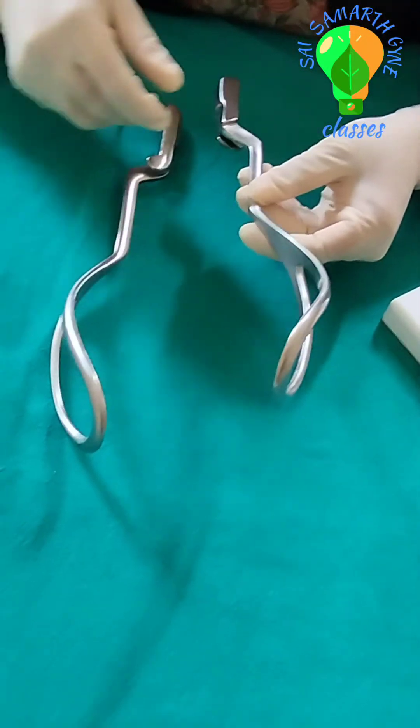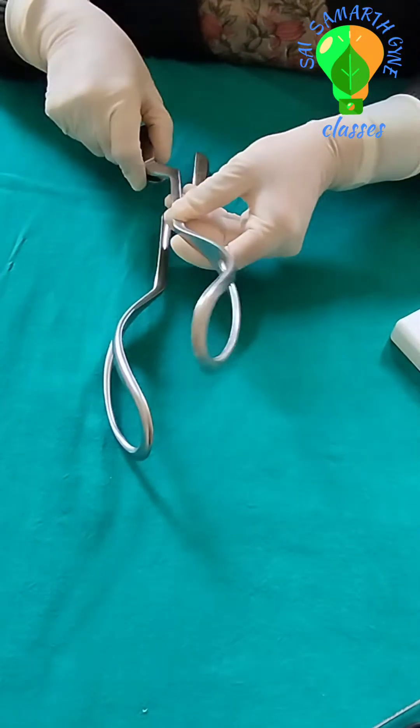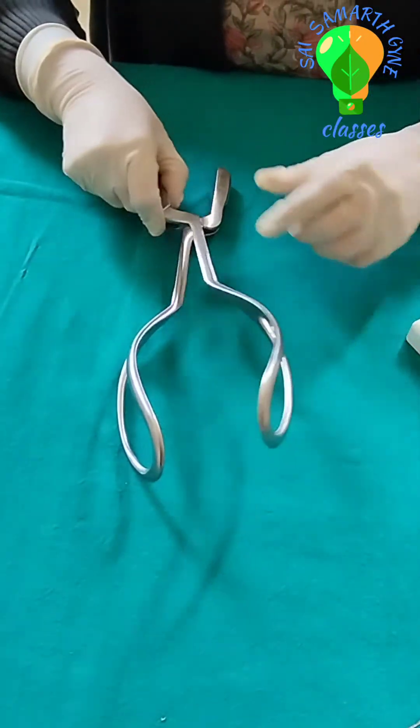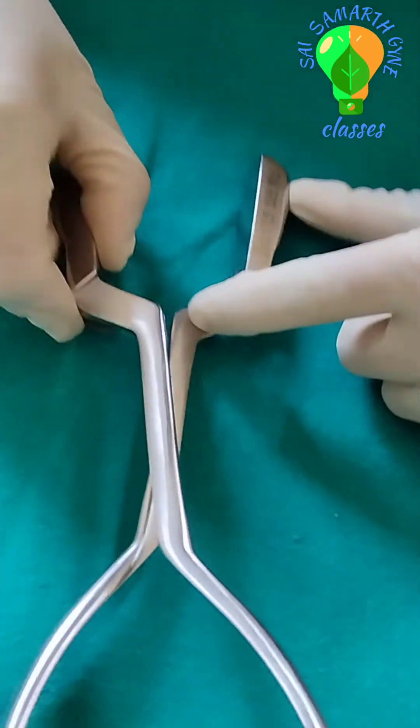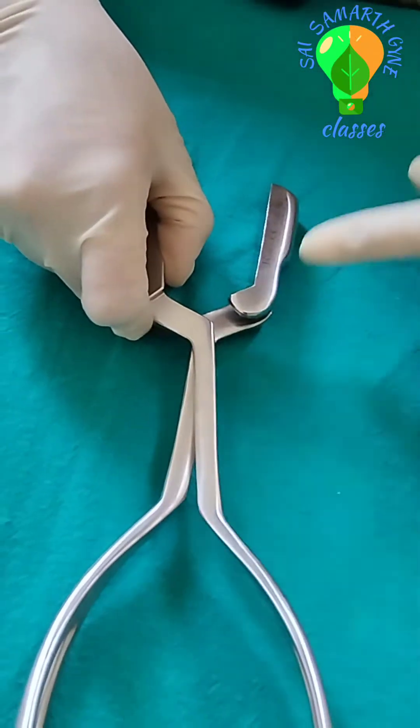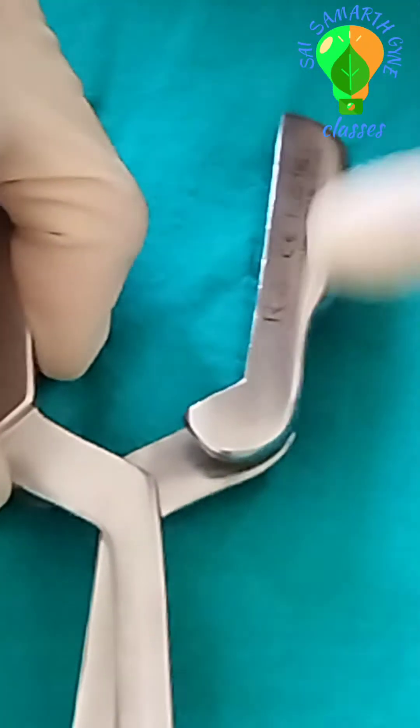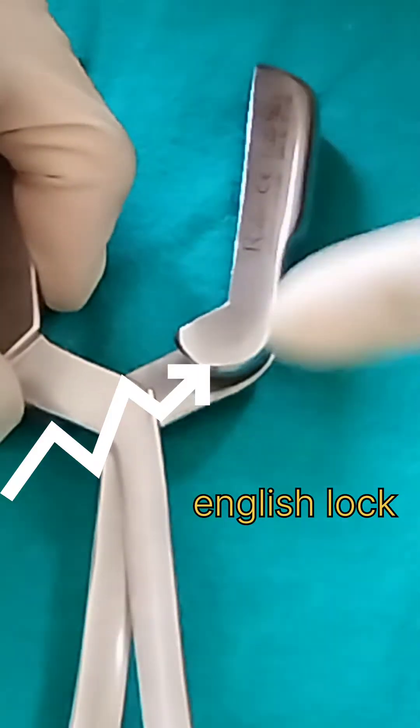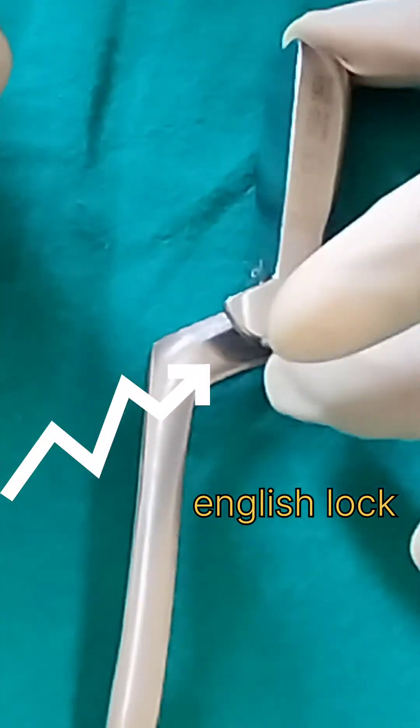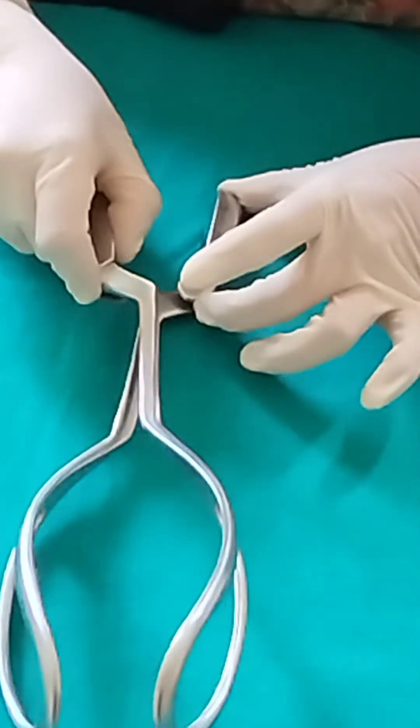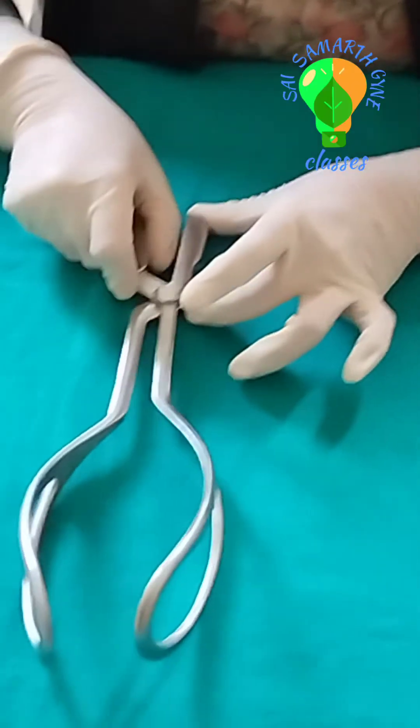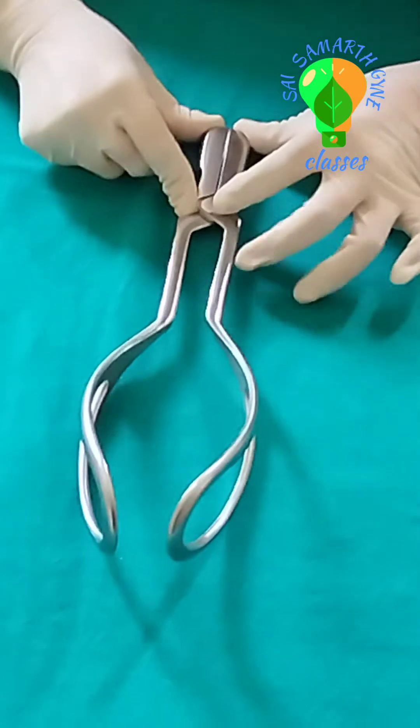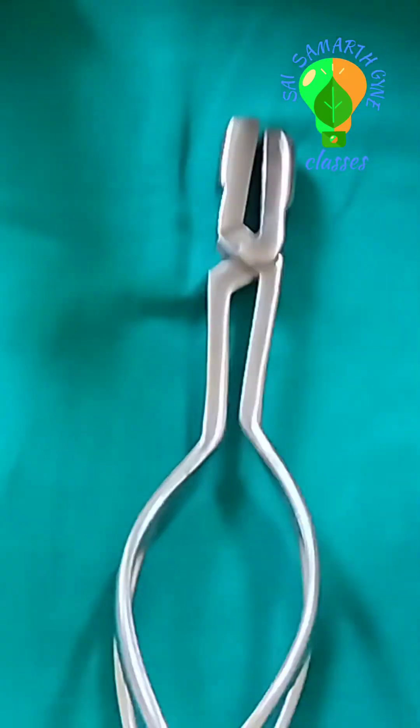Now identification of the left and right side of the forceps. The left side of the forceps has a ratchet on the top, on the superior aspect. You can see some markings over here. When the markings are here and it has a ratchet, this is the left sided blade. The right sided blade fits inside the ratchet and this is the assembled forceps.